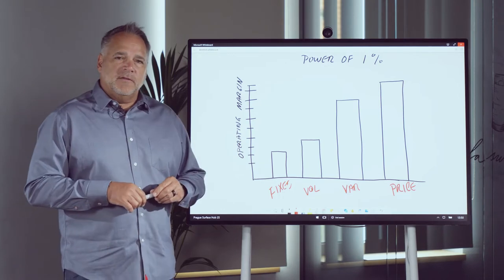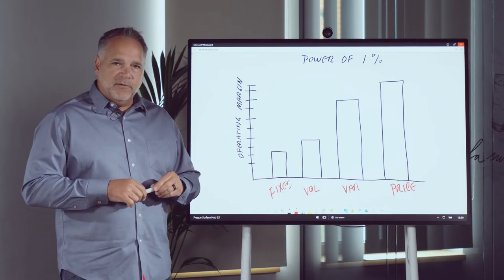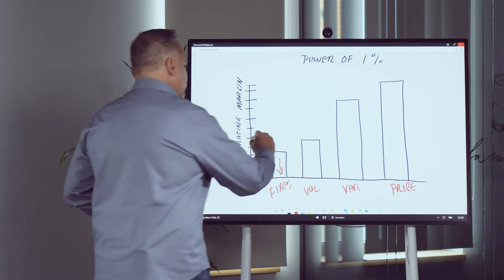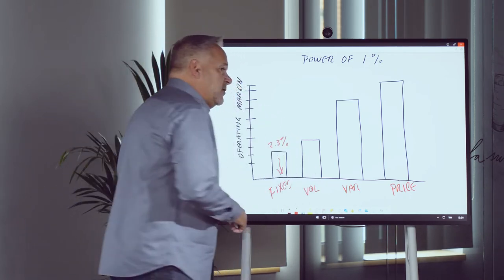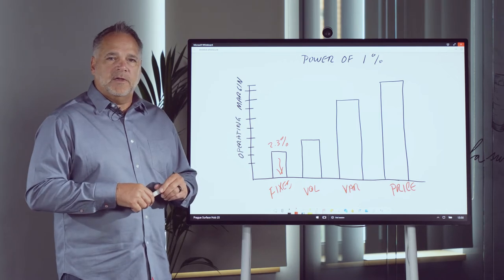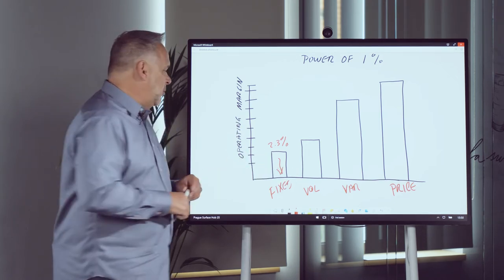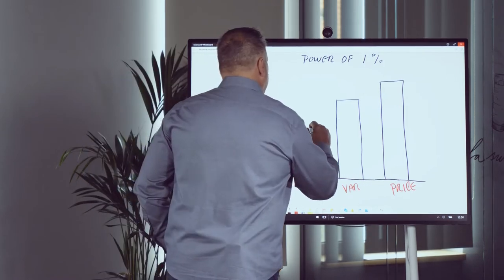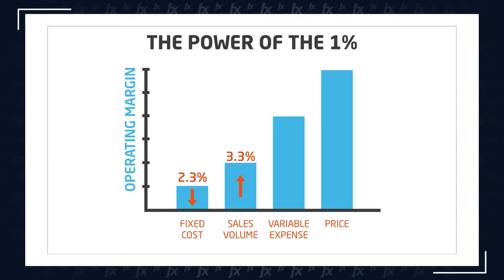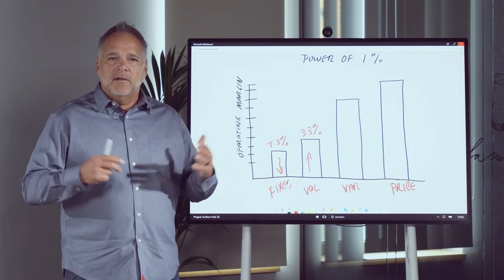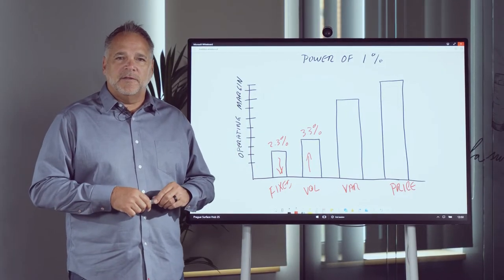So essentially, if you can improve fixed cost, which is to drive down fixed cost, that has a corresponding value of 2.3% on your operating margin improvement, keeping all things equal. The same concept: if you can improve sales volume, which is to say increase sales volume, the impact on your organization is a little over 3% operating margin improvement. This is because you still have sales costs and all the other costs associated with selling product.